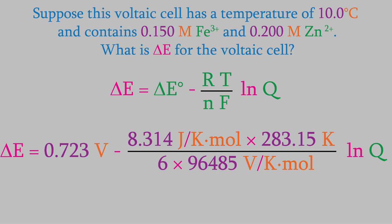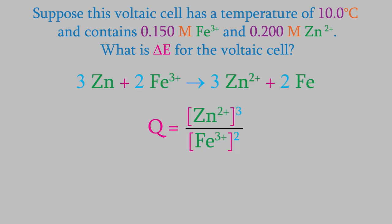To get Q, we need to use this equation, in which we have the concentration of the product ions over the reactant ions, each raised to the coefficient from the balanced reaction.